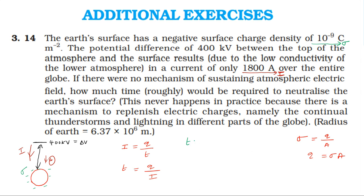Time t is equal to charge divided by current. Charge is equal to charge density times area. So time t equals charge density times area, divided by current. Charge density is equal to 10 to the power minus 9. The surface area of the earth equals 4 pi R squared, where R is the radius of the earth.